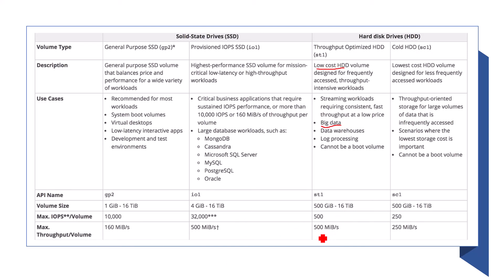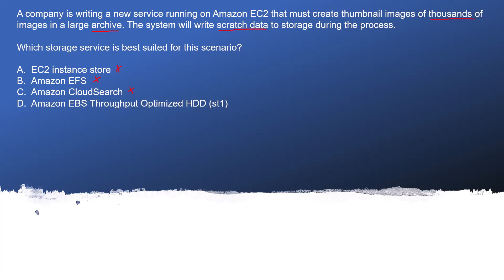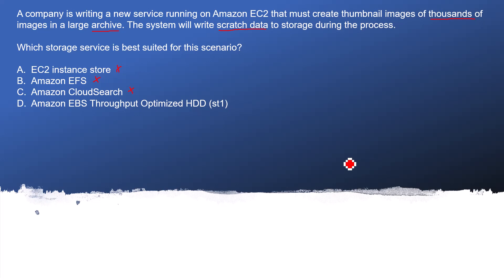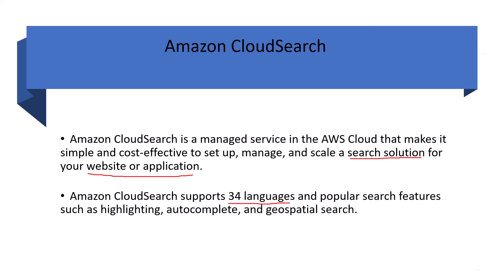The Throughput Optimized HDD has a max throughput of 500 MB/s, which is equivalent to provisioned IOPS in throughput. The key point here is that the scenario is not about immediate response — the process runs in the background and takes time. In this condition, you should prioritize cost saving. HDD saves a lot of money and is useful for big data scenarios. Provisioned IOPS, by contrast, is mainly useful for database-type storage, not for use cases like analyzing large datasets or creating thumbnails.